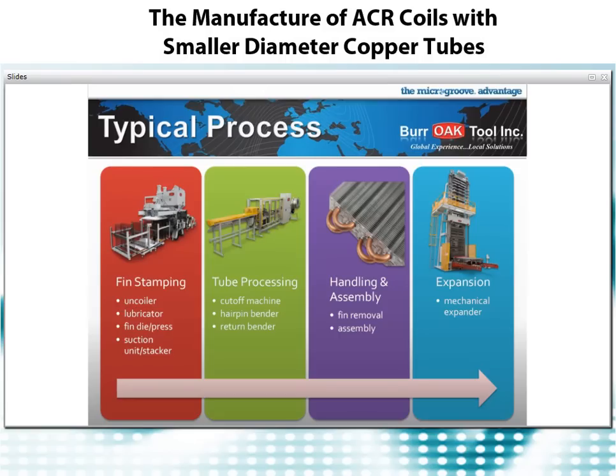Our first order of business will be to provide a quick review of the four basic areas of heat exchanger production: fin stamping, tube processing, fin handling and lacing, and expansion. Once we have finished discussing all four of these basic processes, we will have a nearly complete heat exchanger, but it won't quite be ready for installation. Your manufacturing process will also include a brazing operation to seal all joints, and some applications require that the flat coil be formed into a particular shape such as an L or a U. For today's discussion, we'll concentrate on these four primary processes.